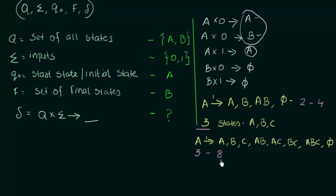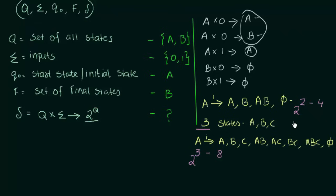We can say that it is 2 raised to the power of the number of states: 2 to the power 2 is 4, and 2 to the power 3 is 8. So this transition function maps Q cross Sigma to 2 power Q — that is, 2 to the power of the number of states. In the case of DFA, it was Q cross Sigma to Q because every state leads to only one next state, but in NFA every state can lead to multiple next states with 2 power Q possibilities.